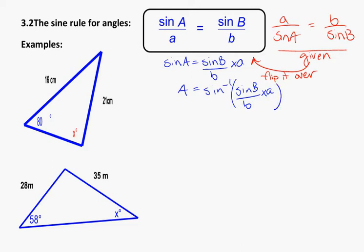So this is the one that you can memorize if you need to be memorizing a formula for how to rearrange it for yourself. A is going to be equal to sine inverse, and make sure you use the sine inverse of bracket sine B divided by little b times little a with a bracket.